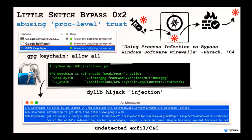Another way to bypass Little Snitch is by abusing its process-level trust. Little Snitch assigns trust at the process level, meaning if a process is allowed to talk to the internet, any code, threads, or dynamic libraries within that process can too. So if we inject malicious code into any trusted process, we can connect out without alerting the user. For example, GPG Keychain is allowed to talk to the internet and is vulnerable to a dylib hijack attack. We plant a malicious dynamic library on the filesystem, it gets loaded automatically into the trusted application's process context, and we connect out undetected.